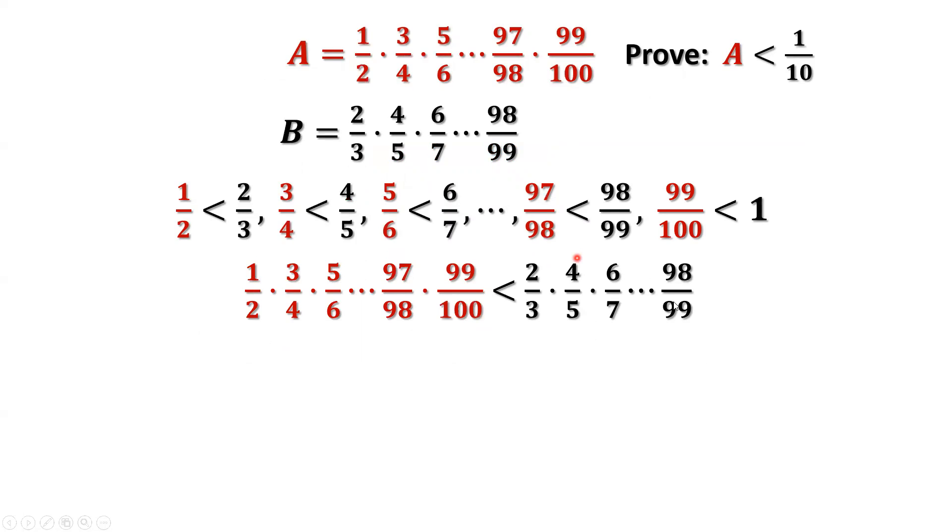Now we have this result. We consider the product. The left-hand side is capital A. The right-hand side is capital B. Therefore, we have A is less than B.